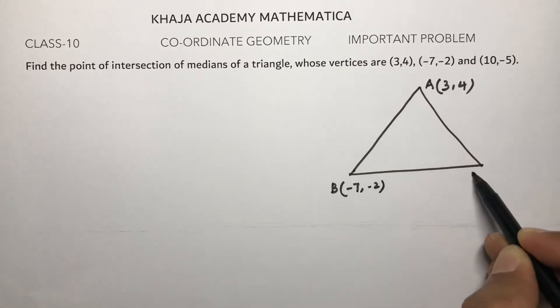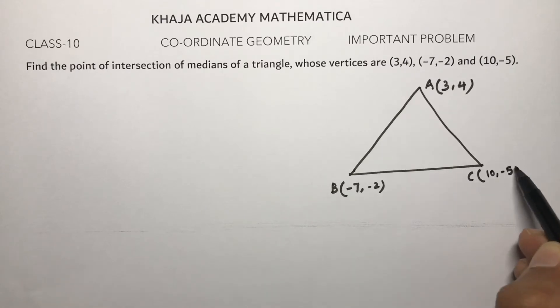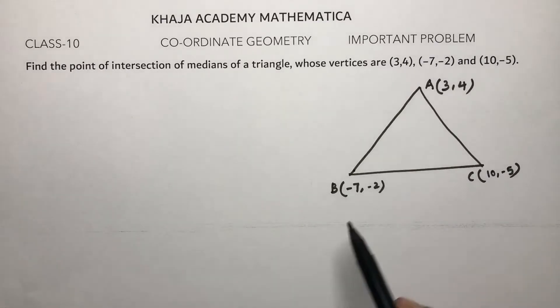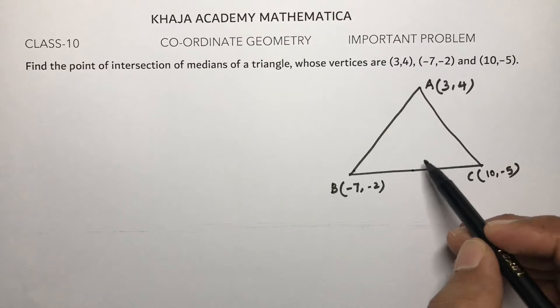B(-7,-2), and C(10,-5). A median is nothing but a line joining the midpoint of one side to the opposite vertex.